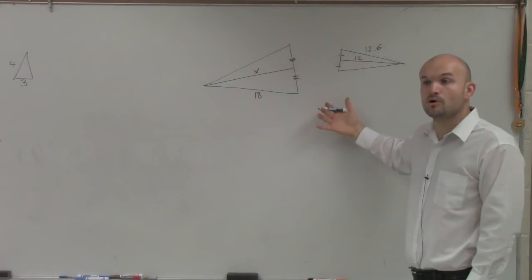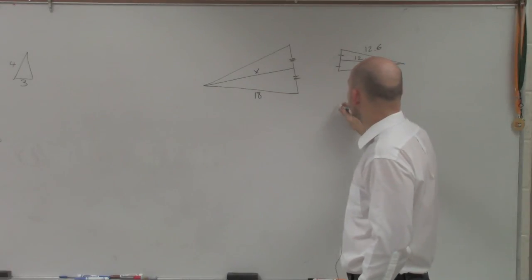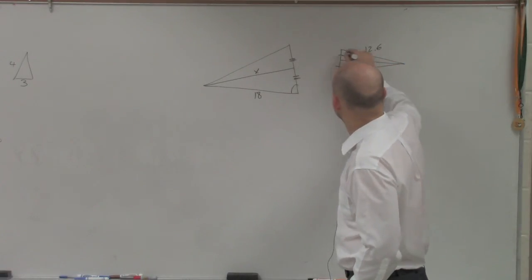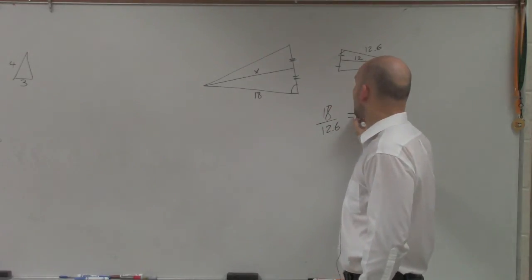So therefore, I need to write a proportion of the sides. Well, here, I could say 18 is to 12.6, and they showed those angles. So you could say 18 is to 12.6 as x is to 12.